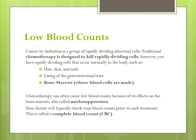Cancer by definition is a group of rapidly dividing abnormal cells. Traditionally, chemotherapy is designed to kill rapidly dividing cells, including cancer cells as well as healthy cells that grow quickly. Examples of some of these healthy cells are the cells that make your hair, skin, and nails grow, the cells that line your gastrointestinal tract, as well as the cells in your bone marrow where blood cells are made. Chemotherapy can cause a decrease in your blood cell counts because of its effects on bone marrow, also called myelosuppression.